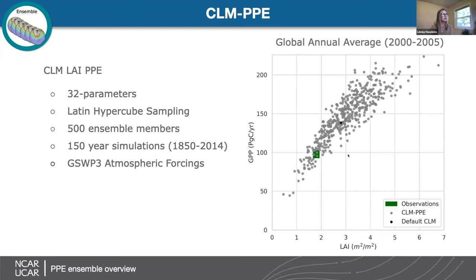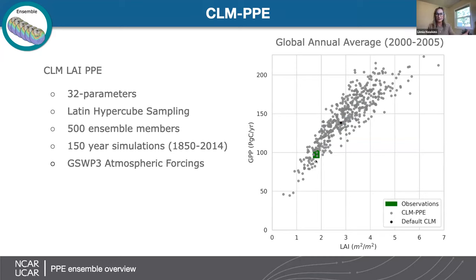Here I'm showing the spread in this ensemble. The default model parameterization is this black point. These are just global mean LAI and GPP. Just by adjusting these parameters, there's a really large spread in the global GPP and LAI. This is roughly where our observational target might be. We're still thinking about how to robustly quantify observational uncertainty in these types of calibration projects, so this green square is likely too small, but roughly we should be somewhere in that region.